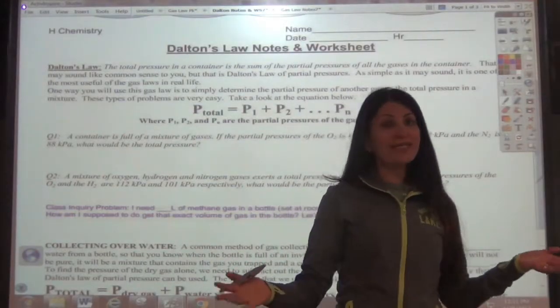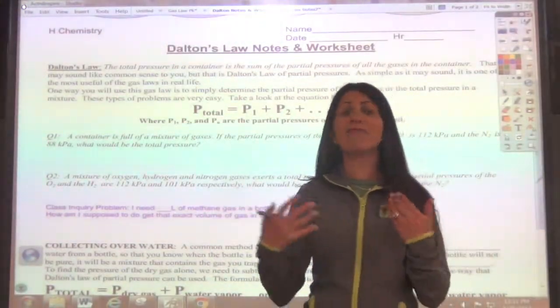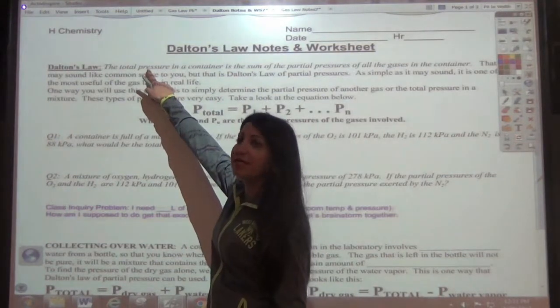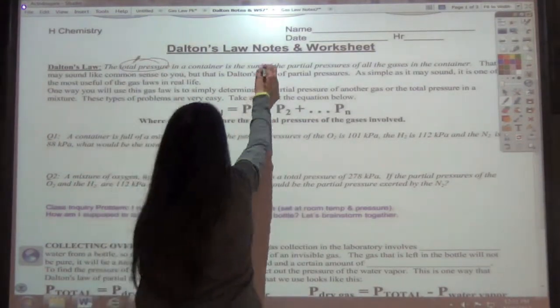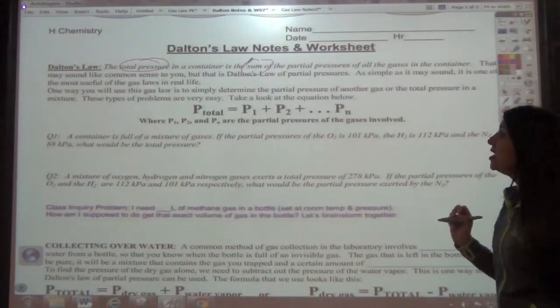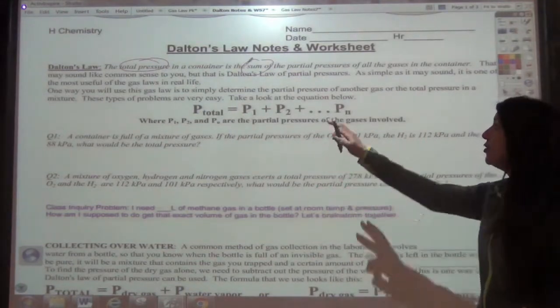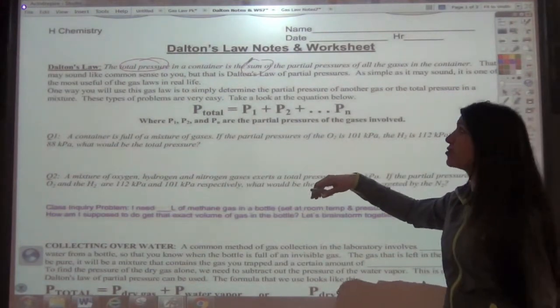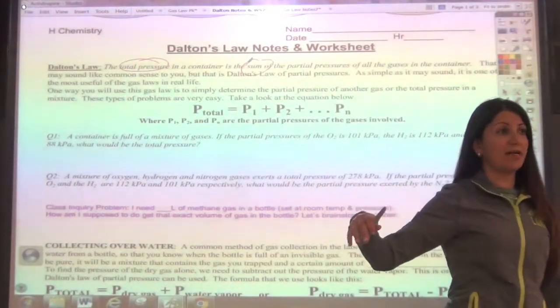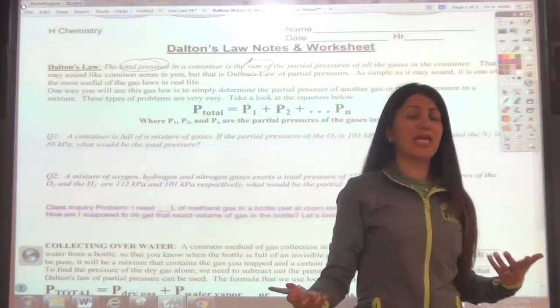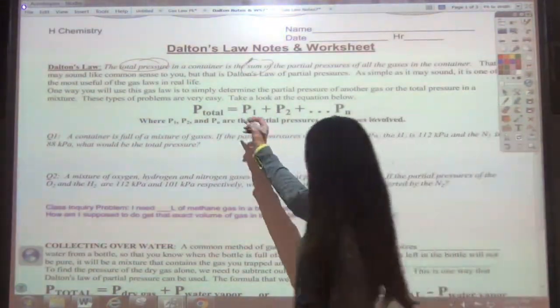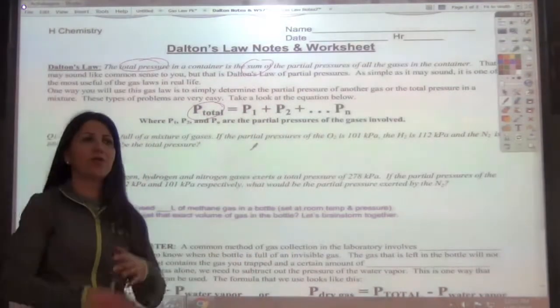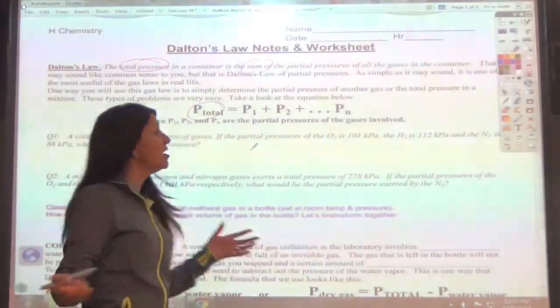So Dalton's law basically just tells us that if you have the sum of the partial pressures, they all will add up to equal total pressure. So circle that and circle the sum of the partial pressures. That may sound like common sense to you, but that really is all that Dalton's law is. So as simple as it may sound, it's actually one of the most useful of the gas laws in real life. So this is just showing an equation where the total pressure is P1 plus P2 plus dot dot dot all the way up to however many pressures you have inside of the container.